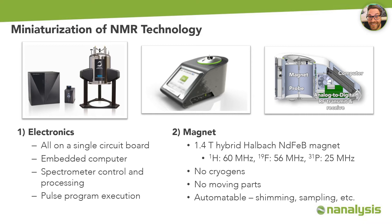The magnet is a 1.4 Tesla hybrid Halbach neodymium iron-boron magnet, which corresponds to 60 MHz in the proton channel. As the system is based on permanent magnet technology, no cryogens are required, and there are no moving parts which might get stuck and cause interruption of measurement operation. Automatable features like automated shimming allow the user to fully focus on the experiment.